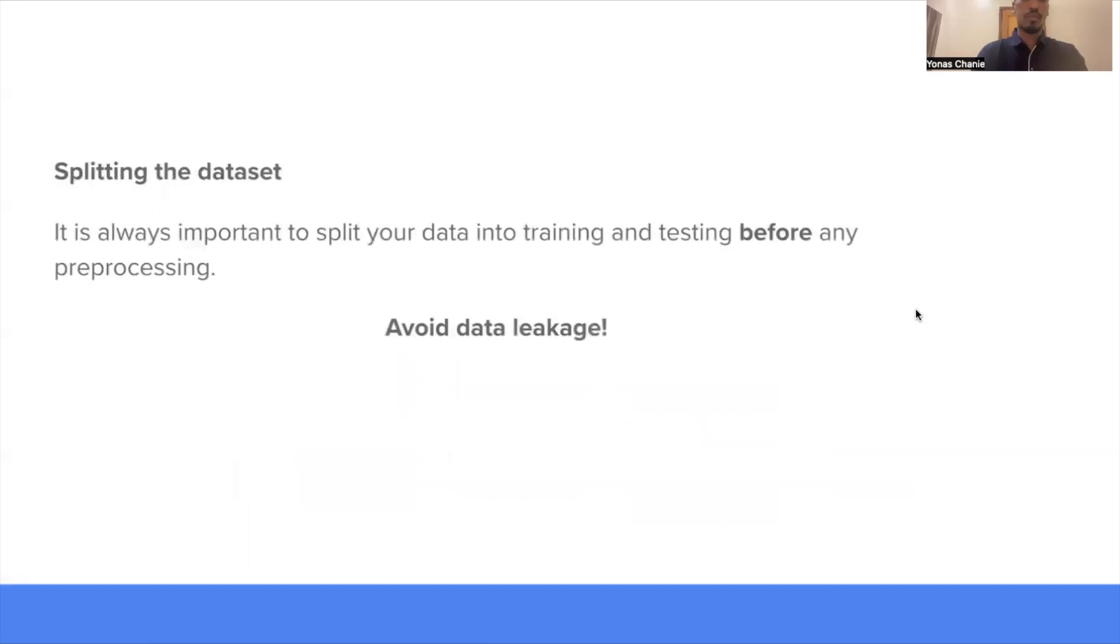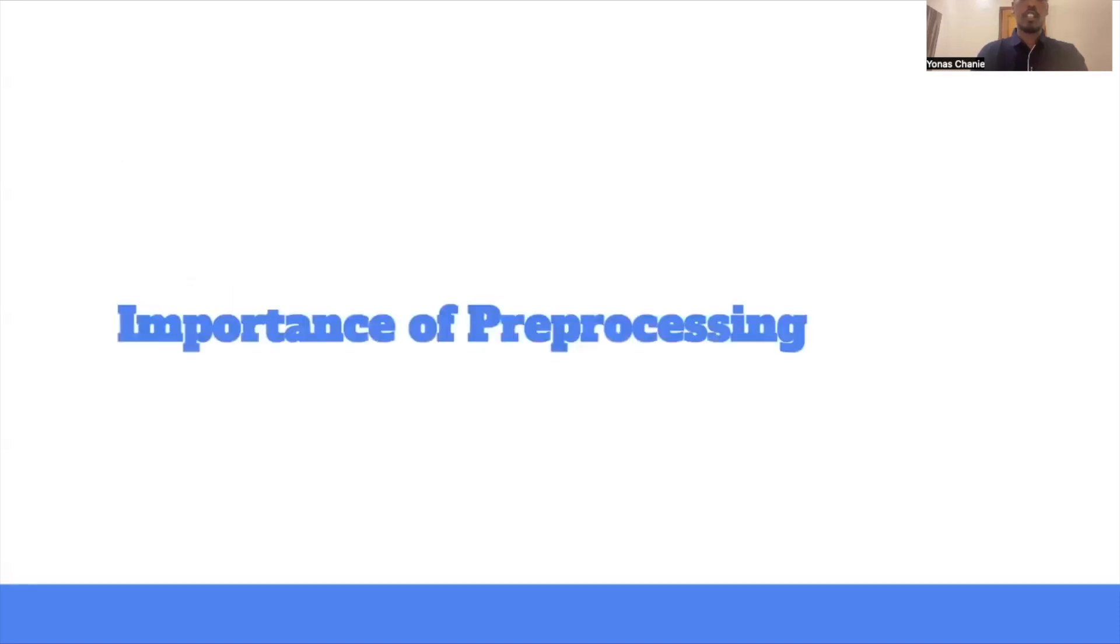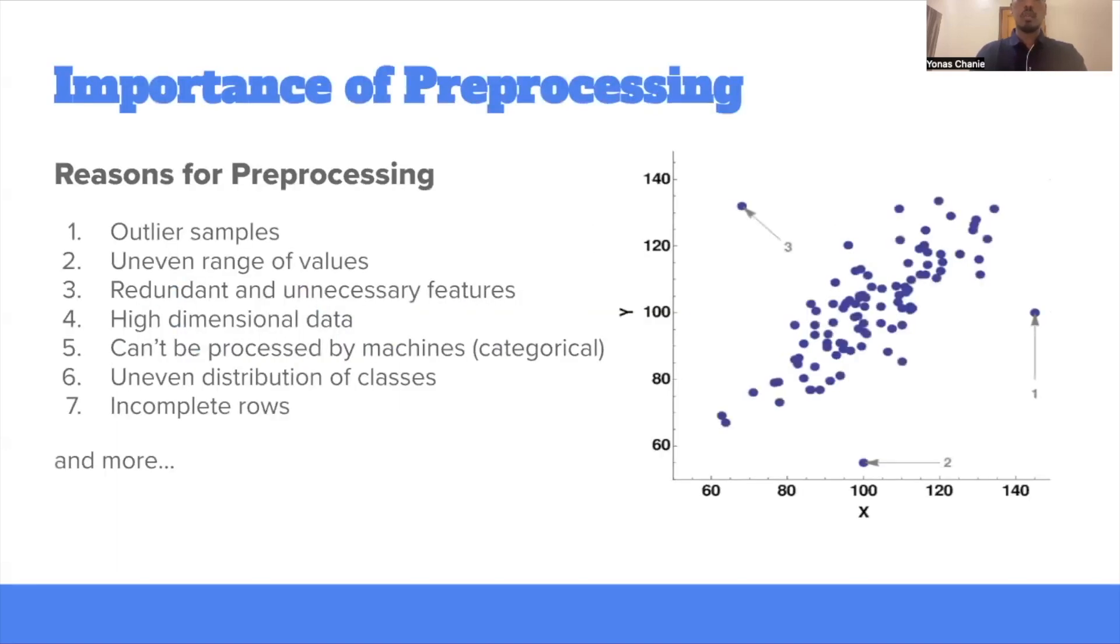One thing we can also notice is that the training and the inference, even though they have the same step, the preprocessing is done separately. One of the main reasons to do that is to avoid data leakage. So it's very important to split the data set into training and testing before any preprocessing. As I mentioned earlier, this helps us avoid data leakage.